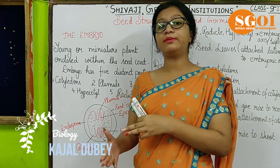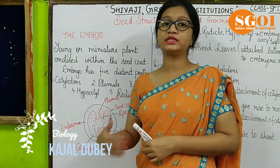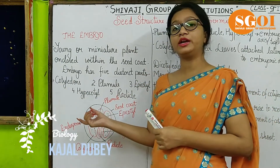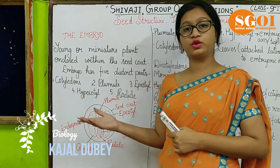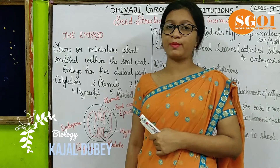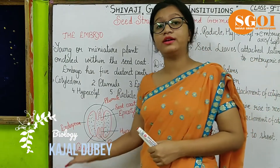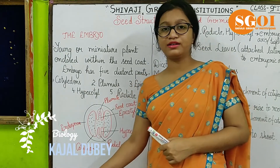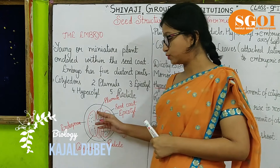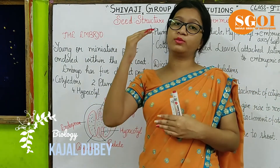As you can see, when the radicle germinates it forms the root. The root is present at the lower base, so when it grows it goes under the soil — under the ground — and this is root formation. The plumule is present at the tip, so when it grows it forms the shoot, which is the upper part of the plant.